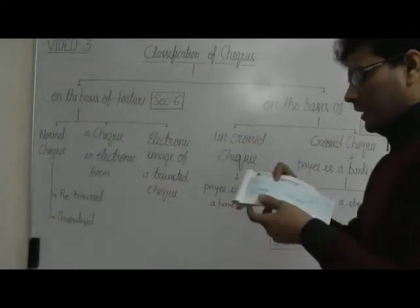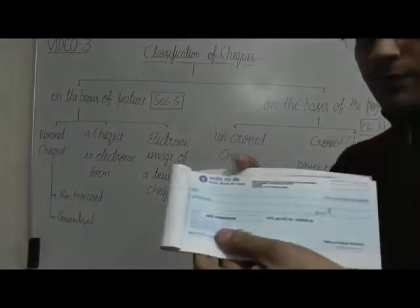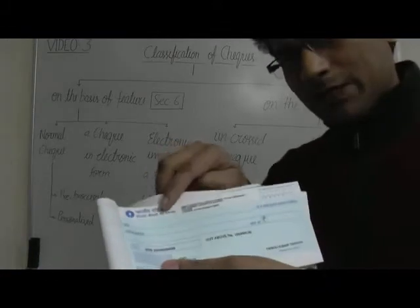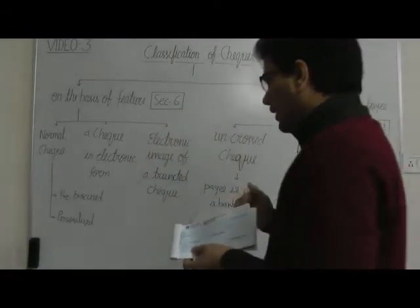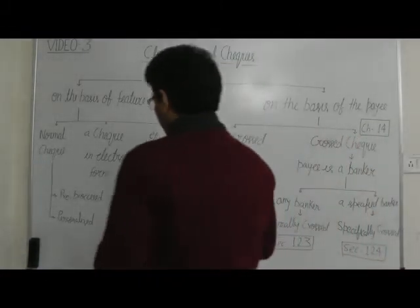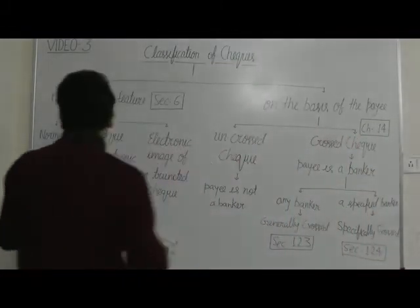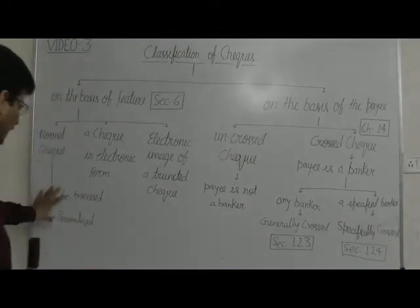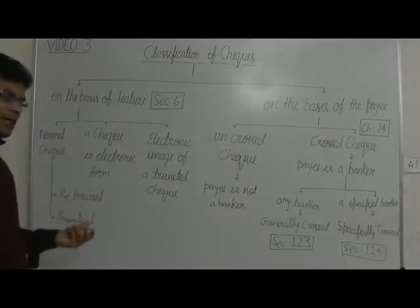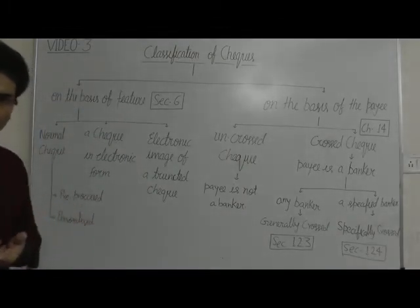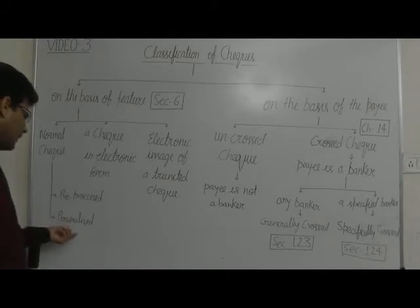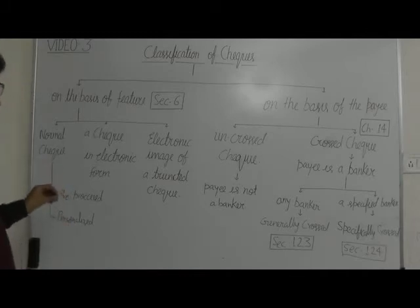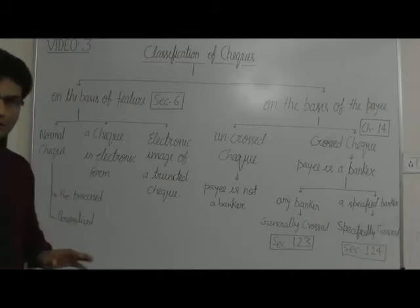There is no difference between the two kinds of checks. Both have equal value and equal transaction features. So normal checks are of two kinds: pre-processed, meaning without the name of the account holder on the check, and personalized, having the name of the account holder on the check.